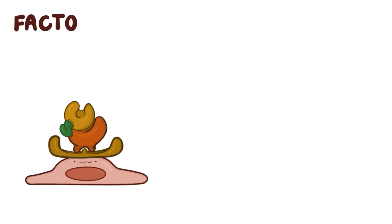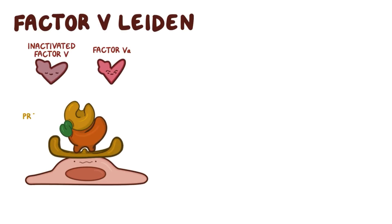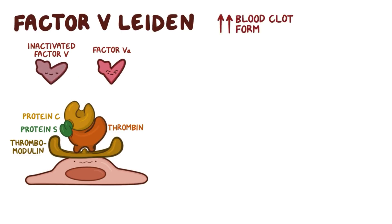So with factor V Leiden, both active factor V (termed 5A) and inactivated factor V become resistant to cleavage by activated protein C because of a mutation that results in a misshapen cleavage site. So when the activated protein C, protein S, and thrombin-thrombomodulin complex binds and tries to cleave factor 5A or inactivate factor V, it can't because the normal cleavage site isn't there. When factor V can't be inactivated, coagulation doesn't slow down, so there's increased blood clot formation.